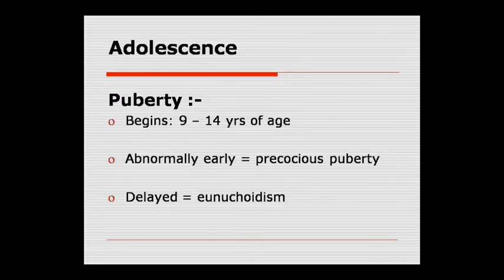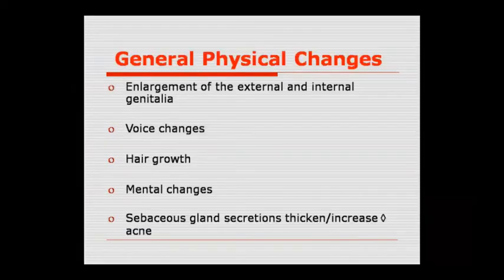Adolescence stage जिसको puberty कहते हैं, यह 9 से 14 साल की उम्र में शुरू होती है। कई बार यह early हो जाती है तो इसको precocious puberty कहते हैं। अगर यह delay हो रहा है तो उसको eunuchoidism कहलाती है। तो 9 साल से पहले या 14 के बाद puberty आना abnormality को indicate करती है।